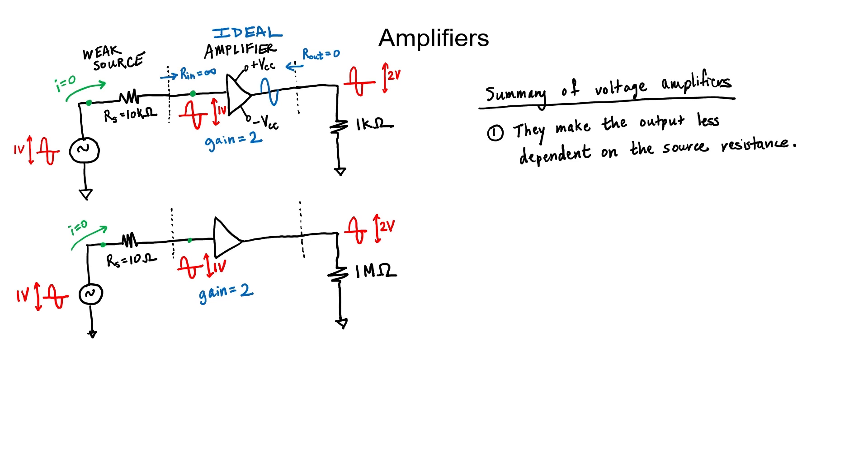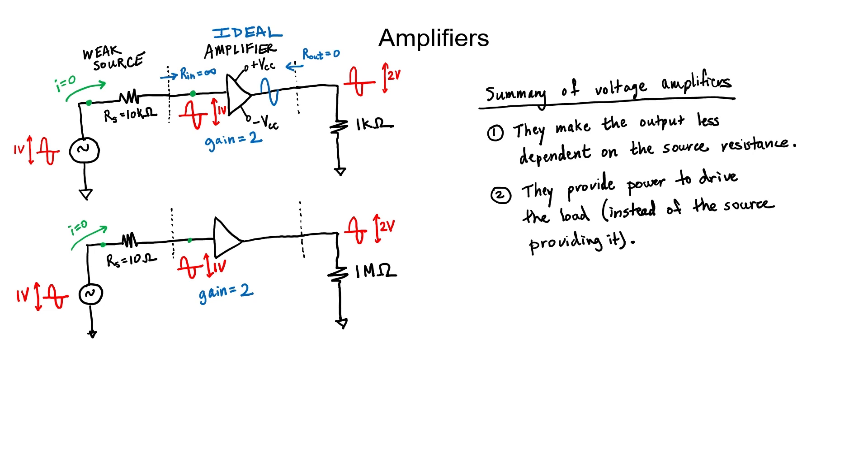Let's now summarize what we've learned about voltage amplifiers. First of all, they make the output less dependent on the source resistance. Secondly, voltage amplifiers provide power to drive the load, so that the source doesn't have to provide that power. Thirdly, voltage amplifiers have a large input impedance, a small output impedance, and a constant gain that can be easily defined in the circuit.